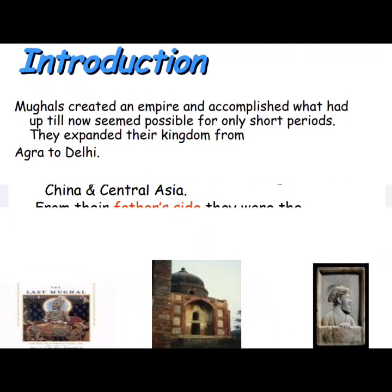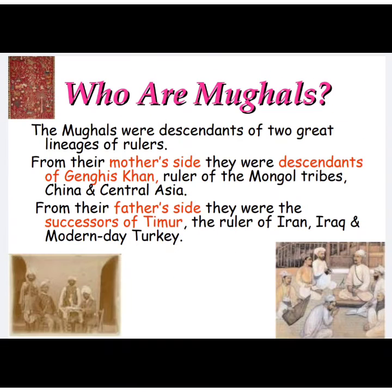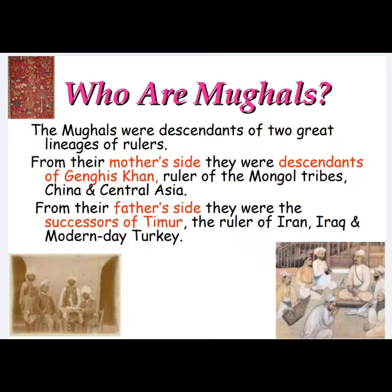Who are Mughals? The Mughals were descendants of two great lineages of rulers. From their mother's side, they were descendants of Genghis Khan, the ruler of the Mongol tribe, China, and Central Asia. And from their father's side, they were successors of Taimur, the ruler of Iran, Iraq, and modern-day Turkey.